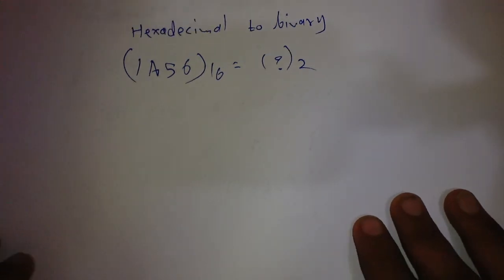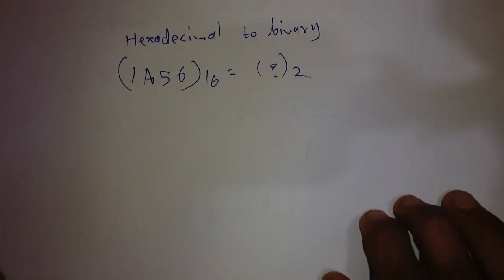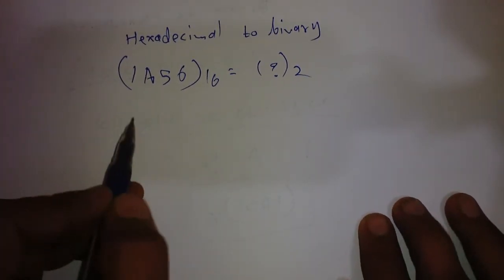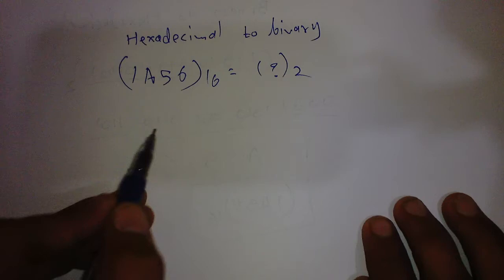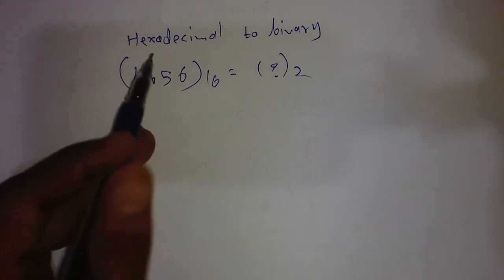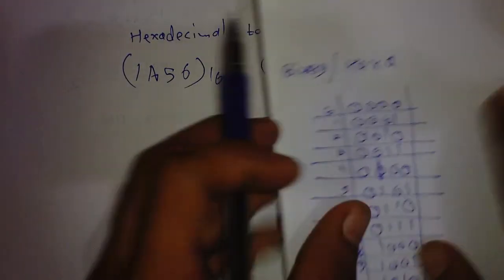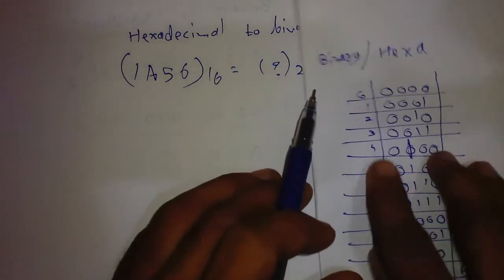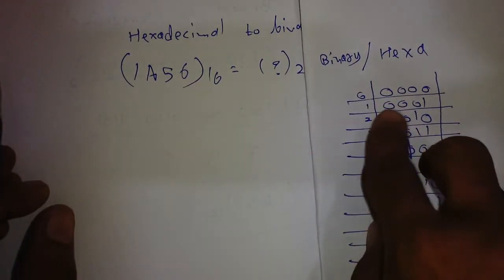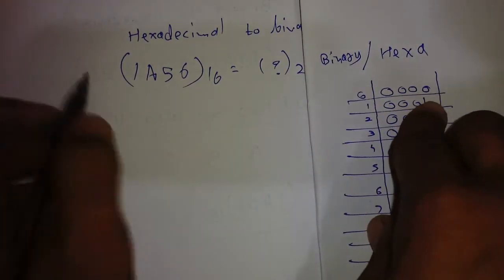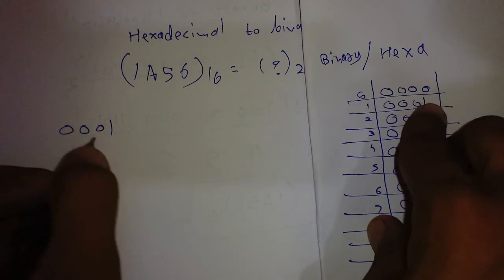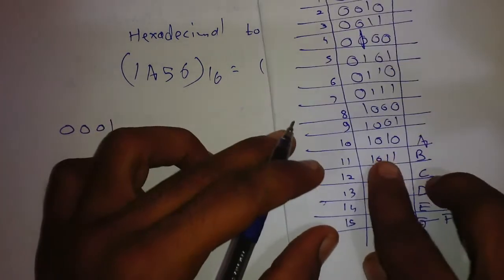We simply put the equivalent binary values of each hexadecimal digit using a chart. For 1, we have 0001. For A, we have 1010.